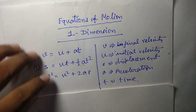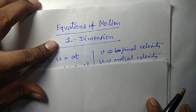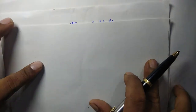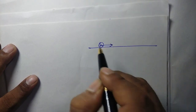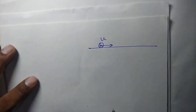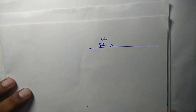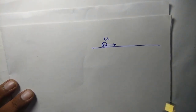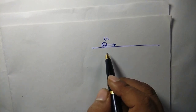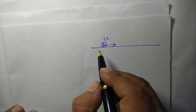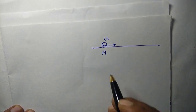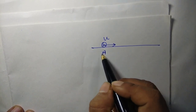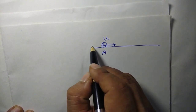Alright, so let's start. Let's first visualize the situation. Let's say a body of mass m is moving initially with velocity u. We can consider a ball, for example, rolling on the field along a straight line. We consider this position as A, which is also at the initial time, that means t equals to 0.